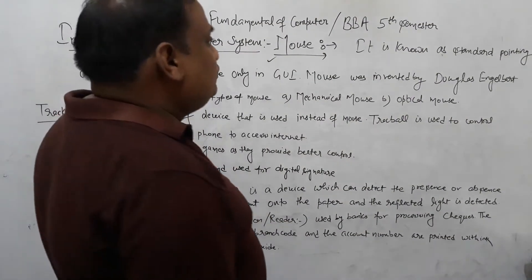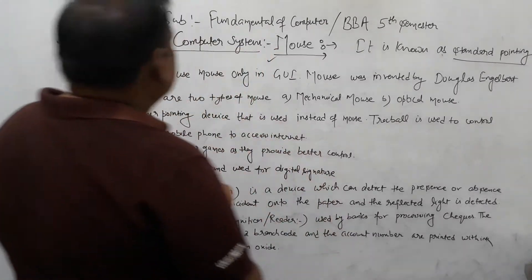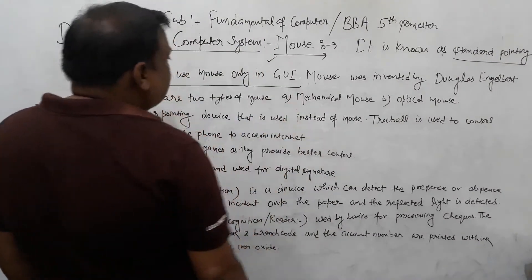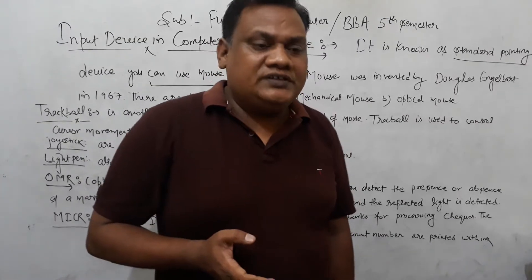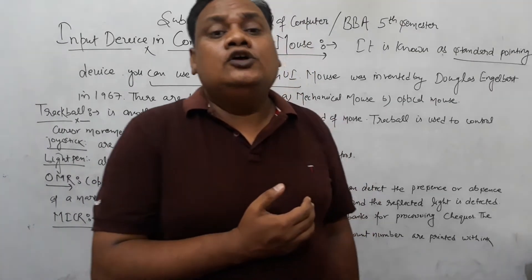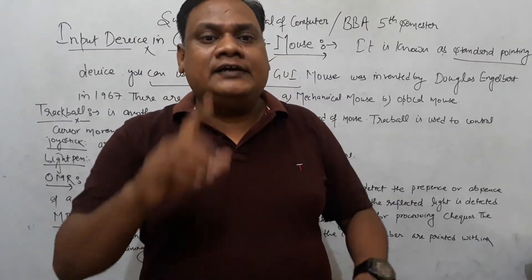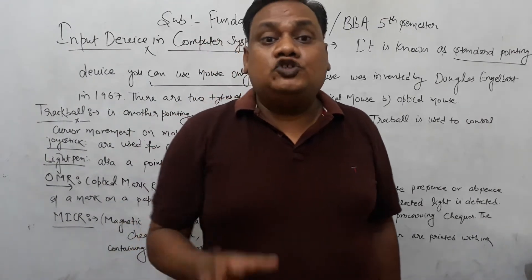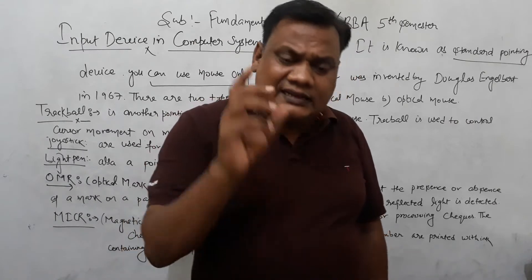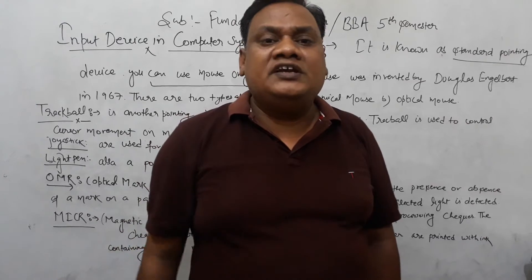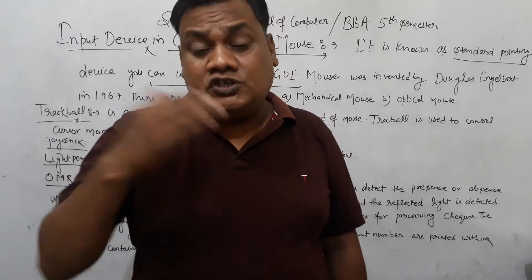The mouse is known as the standard pointing device. You can use the mouse only in a GUI — Graphical User Interface. Windows XP is a Graphical User Interface operating system. When we open Windows and see the desktop with icons like My Documents or Recycle Bin, we click on those icons — that is GUI.